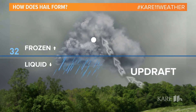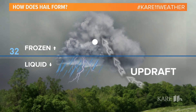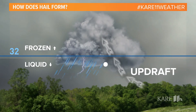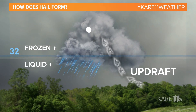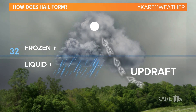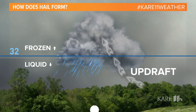Without that, snowflakes would melt quickly and fall to the ground as raindrops. But because that updraft can keep that ice floating, keep super-cooled water droplets falling and condensing on it, that hail can get bigger and bigger.